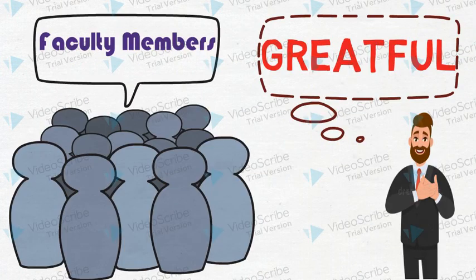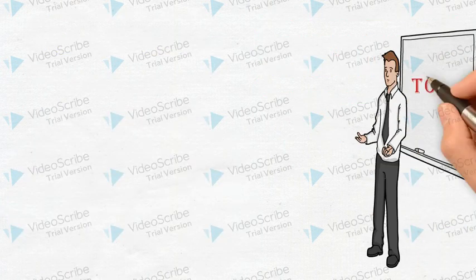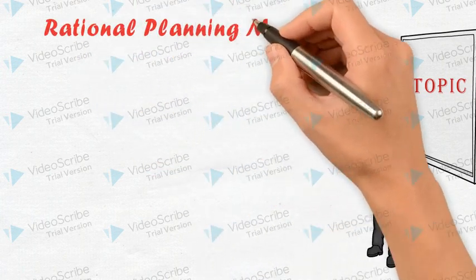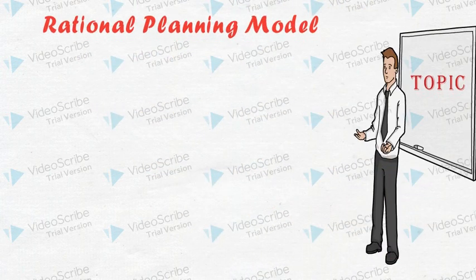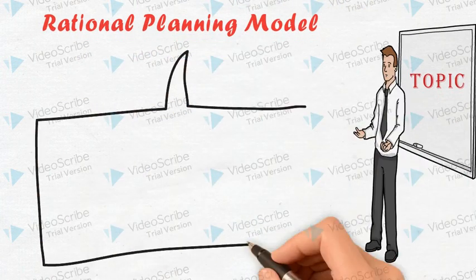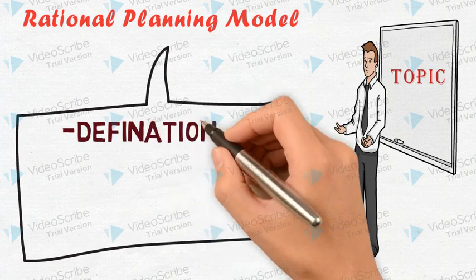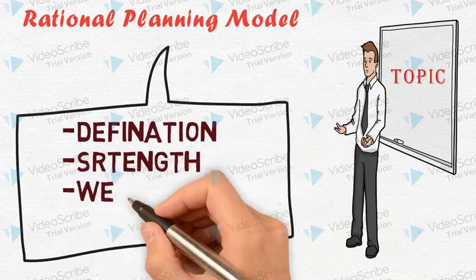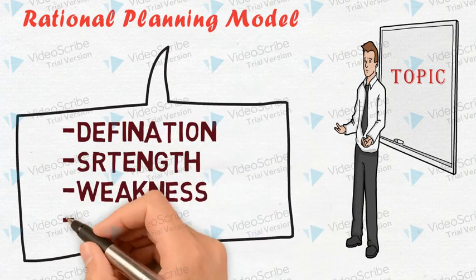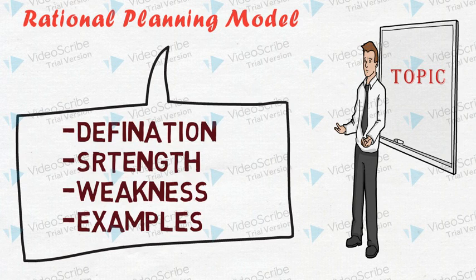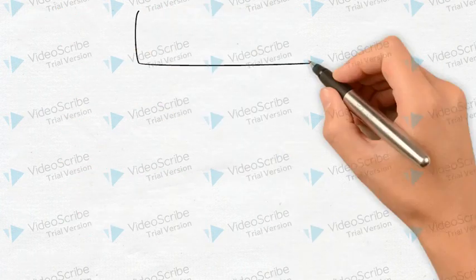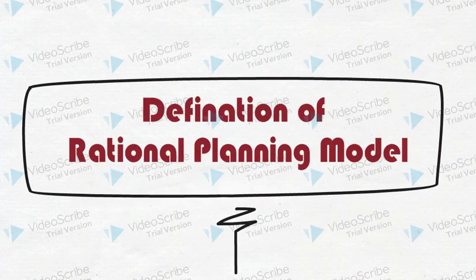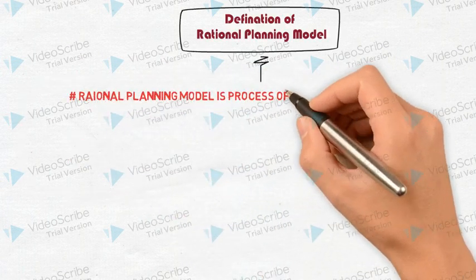Let's have a look at the topic first. Today I will discuss the rational planning model. Under this topic, I will describe the definition, strengths, and weaknesses, and finally I will share an example from my work experience about the rational planning model. In the definition, we find that it is a planning process which involves a number of rational actions or steps.